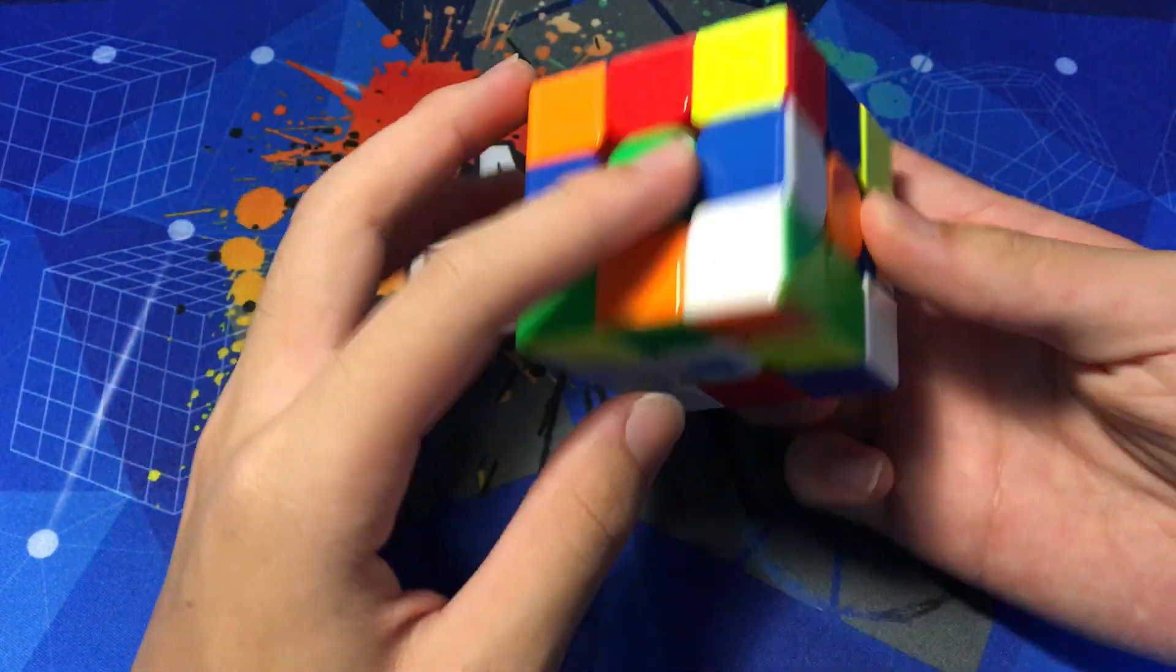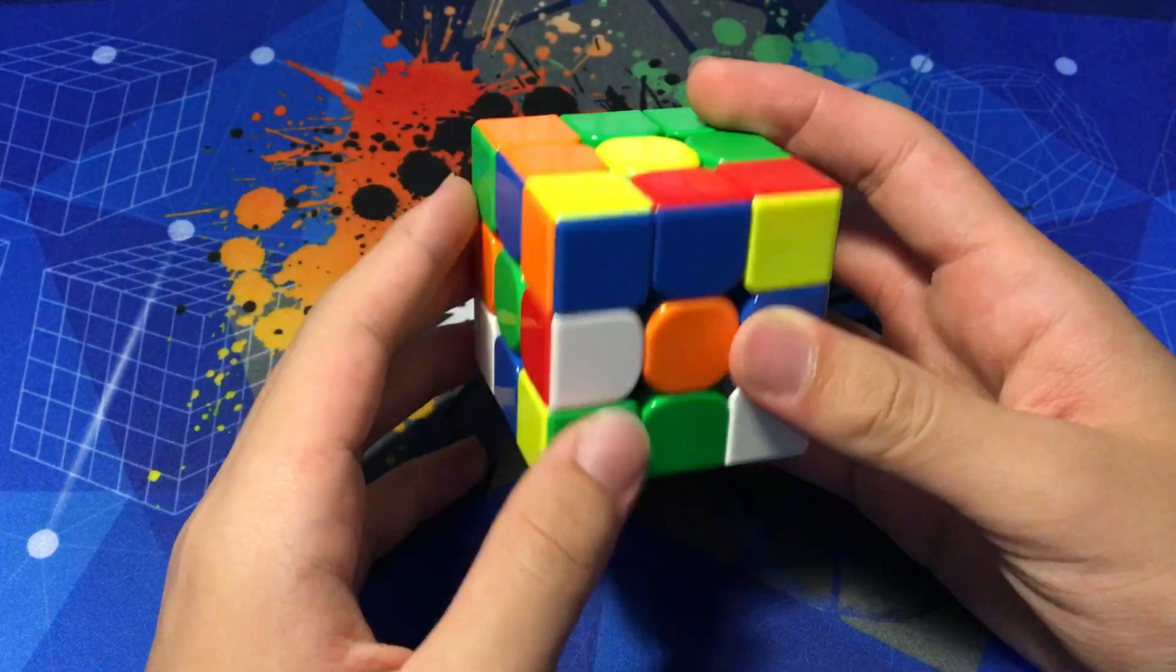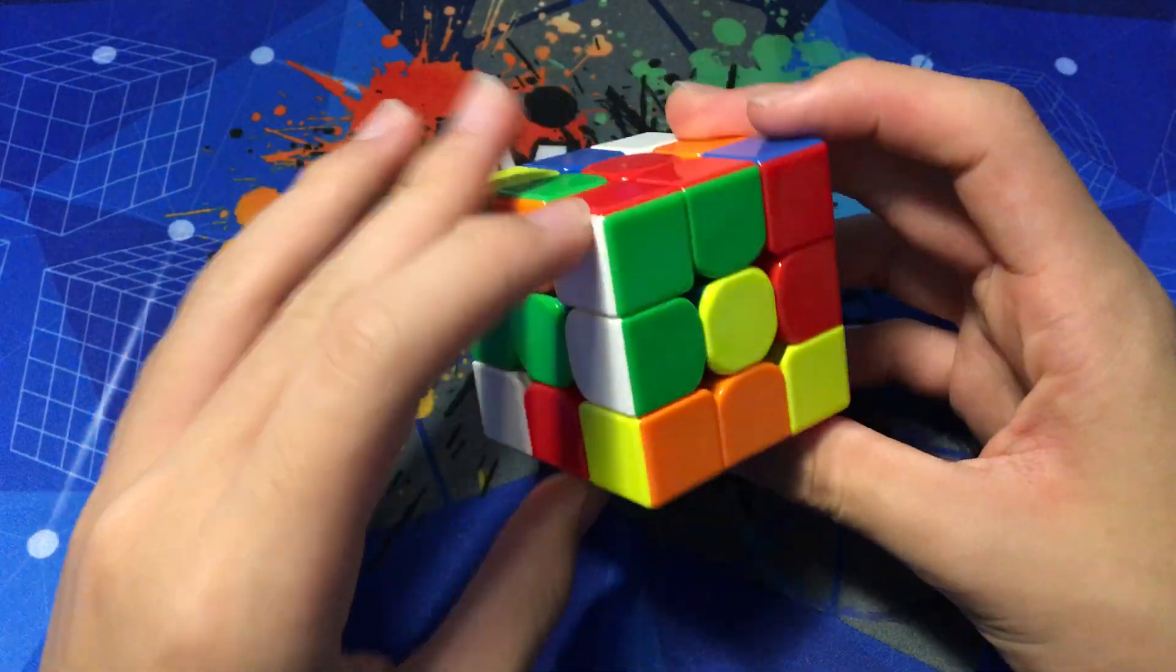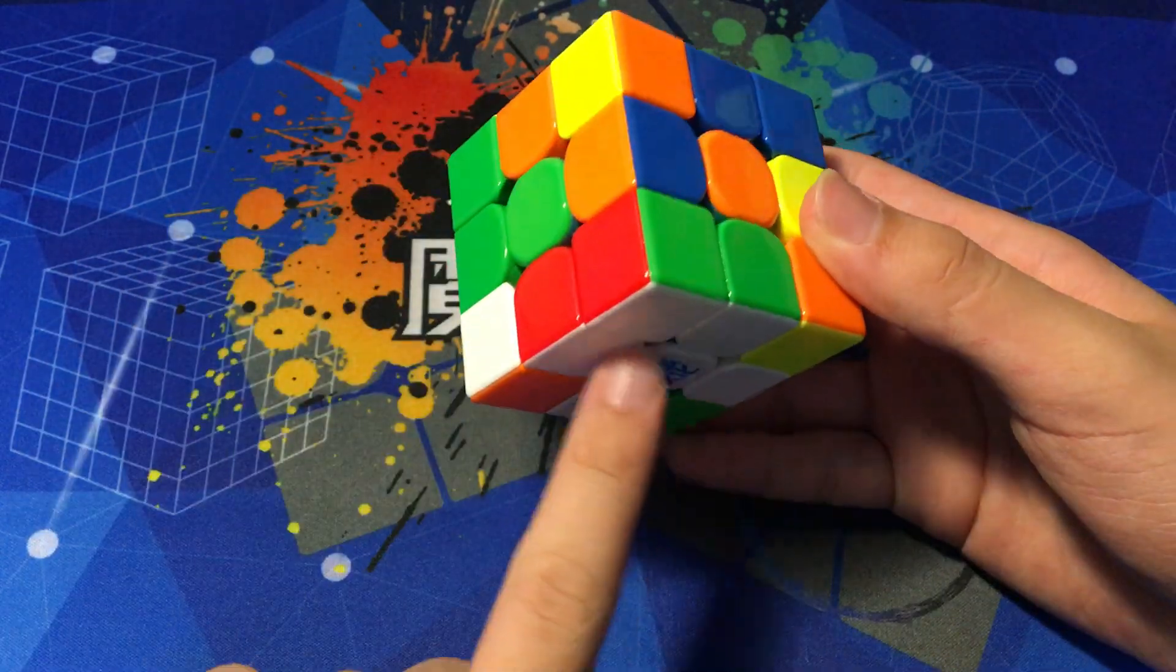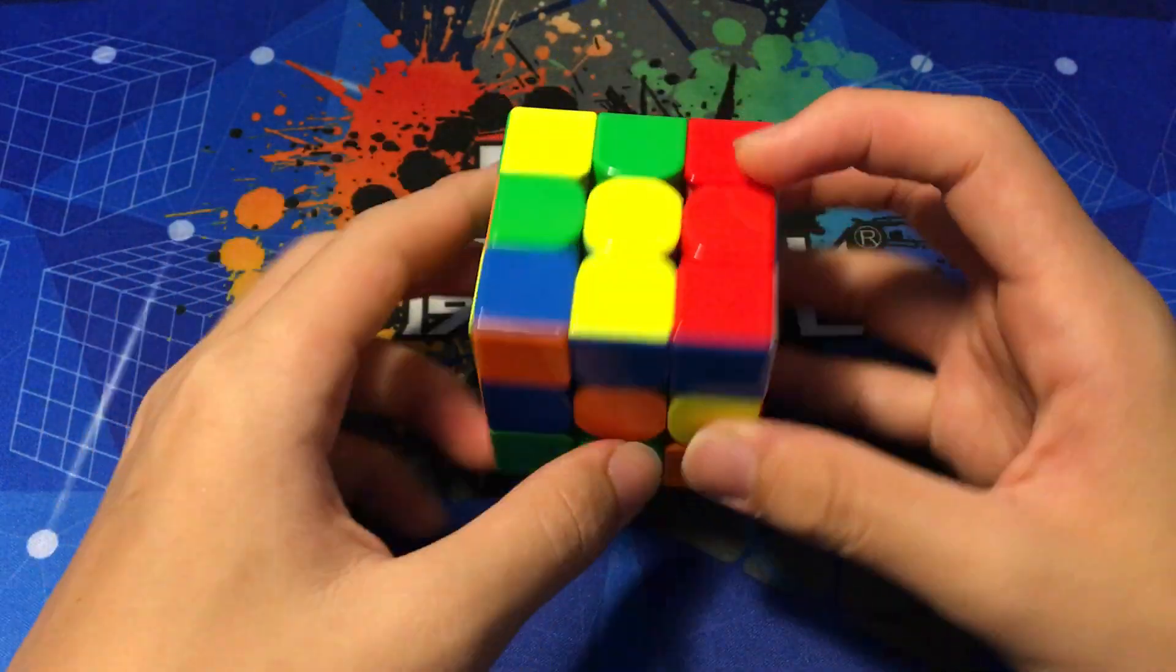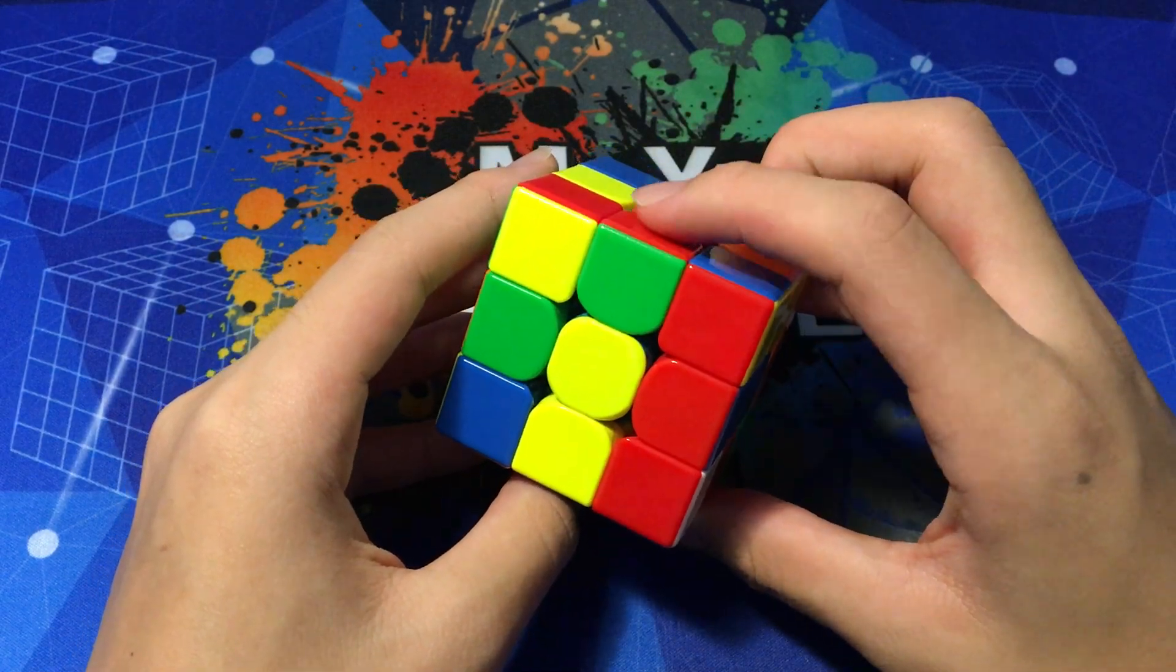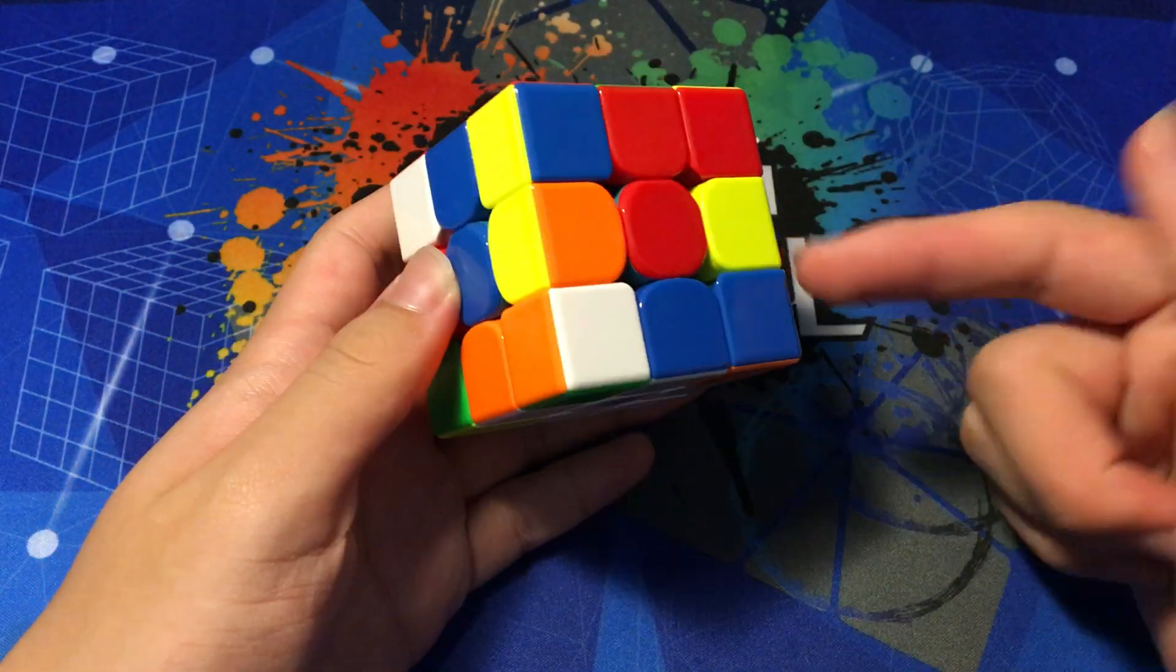First of all, inserting this blue edge into the back. And now inserting these two at the same time by setting these two up and inserting this block down at the bottom. And now we just have this edge left to insert into the back to complete the X-cross.